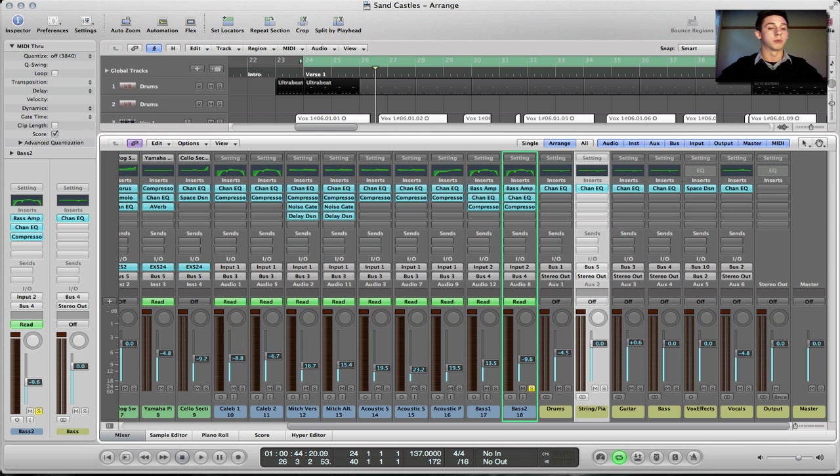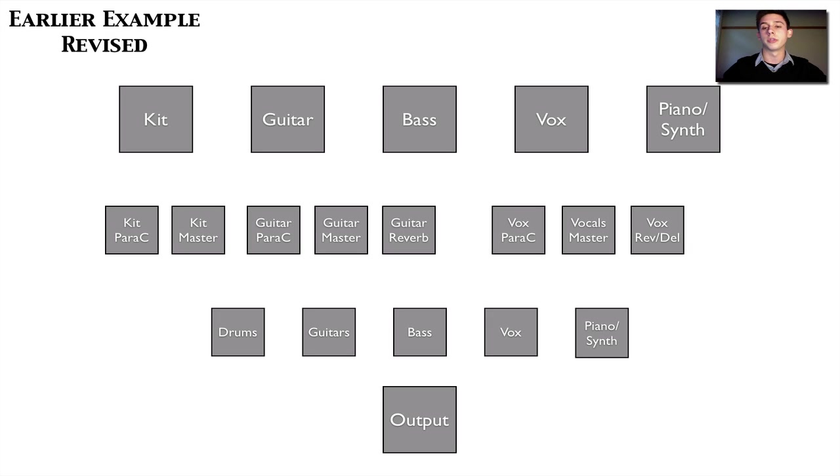And this starts to get kind of complicated, especially if you have parallel compression, parallel reverb, parallel delay, and then you have your submixes. If you want to do some stereo imaging, you can have very long lines of audio flow in your project. And all you have to do to make it simpler is just follow the flow of sound from input to output at every stage. That's all I really want to show here. We'll get into more about that in the next tutorial, which I will link at the end.